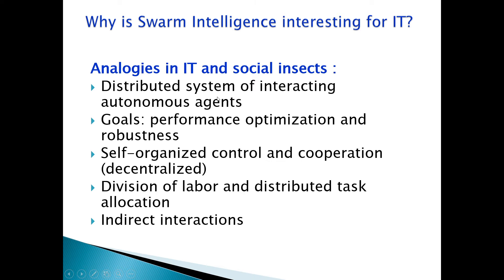The analogies between IT and social insects are: first, distributed system of interacting autonomous agents; second, goals are the same — performance optimization and robustness; third, self-organized control and cooperation, that is decentralization; fourth, division of labor and distributed task allocation; and fifth, indirect interactions. All of these points which map to IT also map to the behavior of social insects.